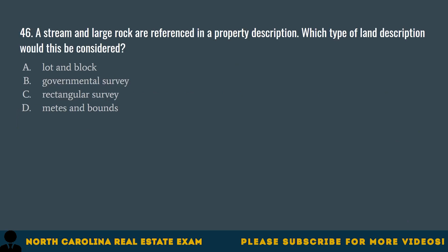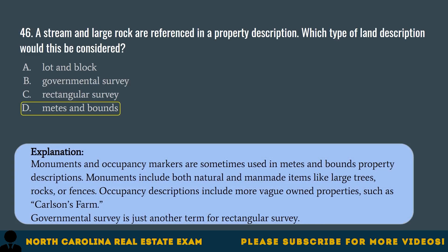Question 46. A stream and large rock are referenced in a property description. Which type of land description would this be considered? A. Lot and block. B. Governmental survey. C. Rectangular survey. D. Metes and bounds. The correct answer is D. Metes and bounds. Monuments and occupancy markers are sometimes used in metes and bounds property descriptions. Monuments include both natural and man-made items like large trees, rocks, or fences. Occupancy descriptions include more vague owned properties such as Carlson's Farm. Governmental survey is just another term for rectangular survey.